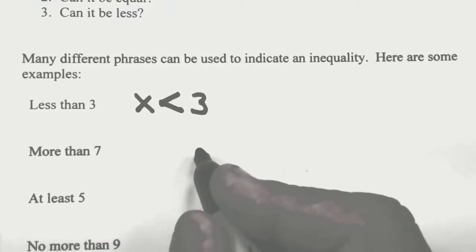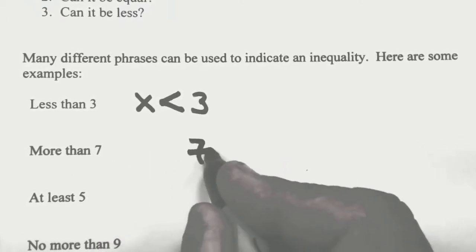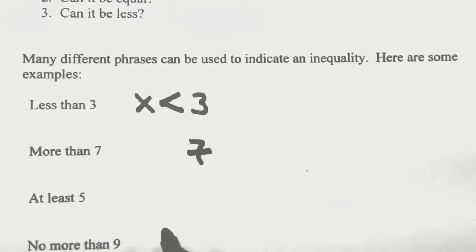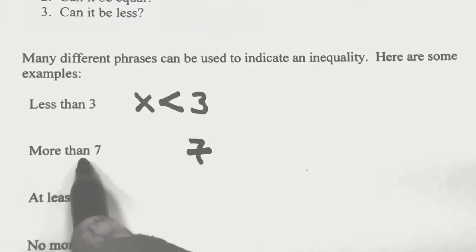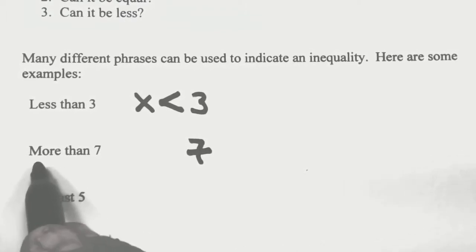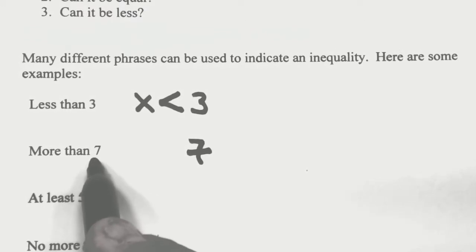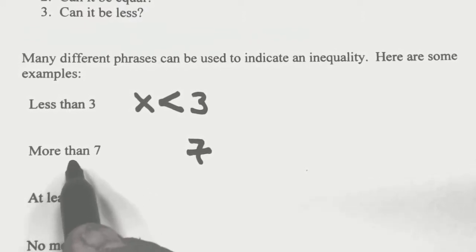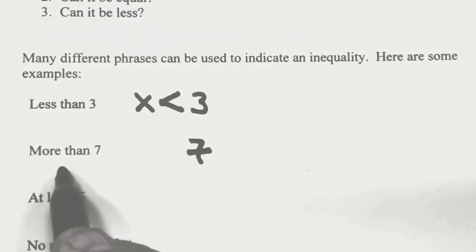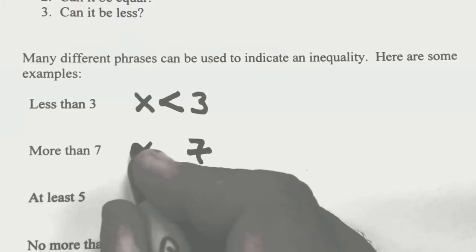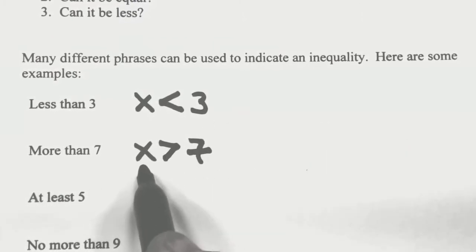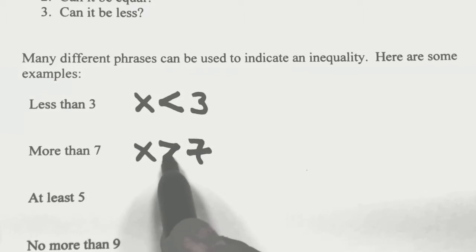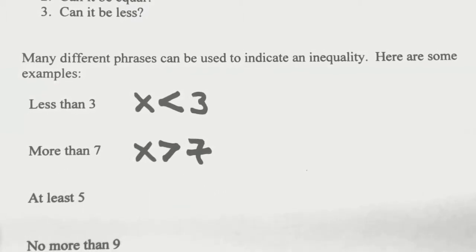More than 7: we're referring to 7. Can our value be more than 7? Yes. Can it equal? Well, if you've got to be more than 7, it can't equal 7. And it can't be less. So in this case, x would have to be greater than 7 — meaning the x is larger, it's more than 7.